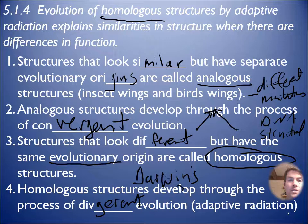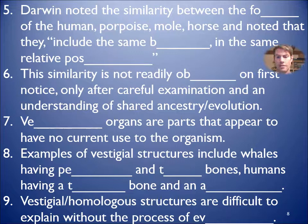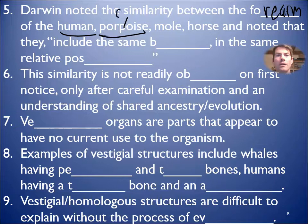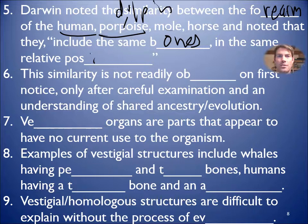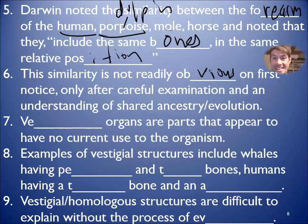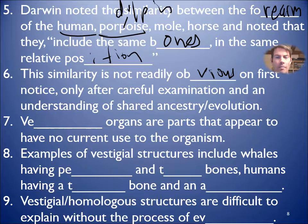Darwin pointed out the forearm of the human, the porpoise (which looks like a dolphin), a mole, a horse - and notice they have the same bones in the same relative positions. It's not really obvious at first until you really look at all the bones. Even if you eat chicken, in a chicken wing you can see a lot of the similar bones and the way they come together - though not identical, since chickens evolved differently from mammals.